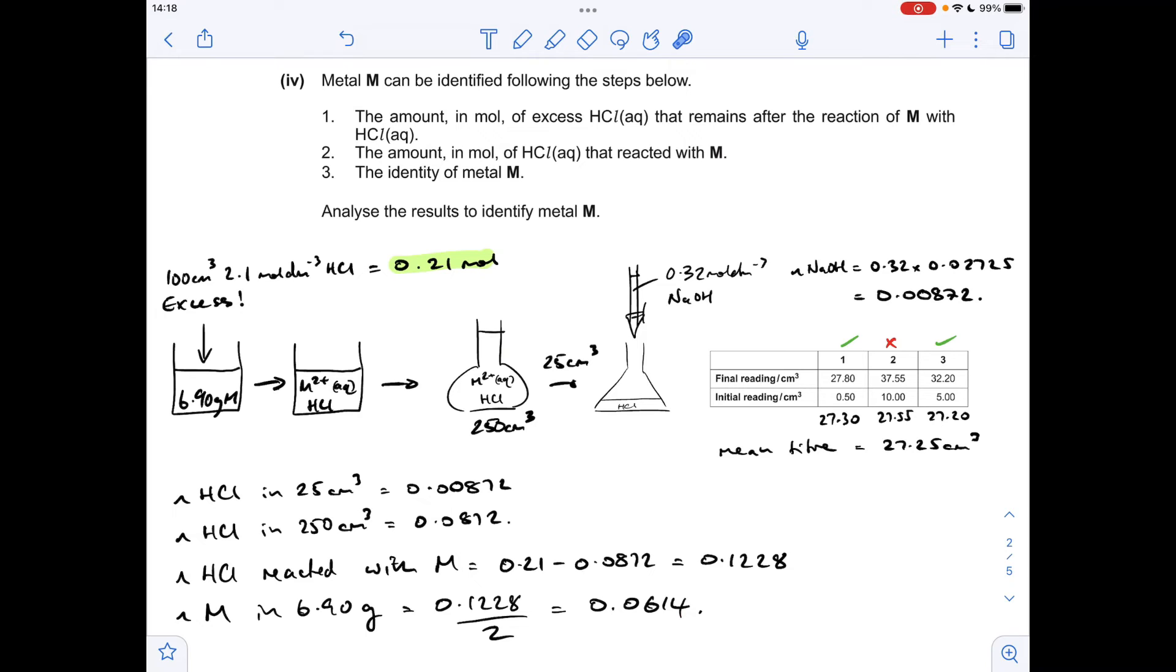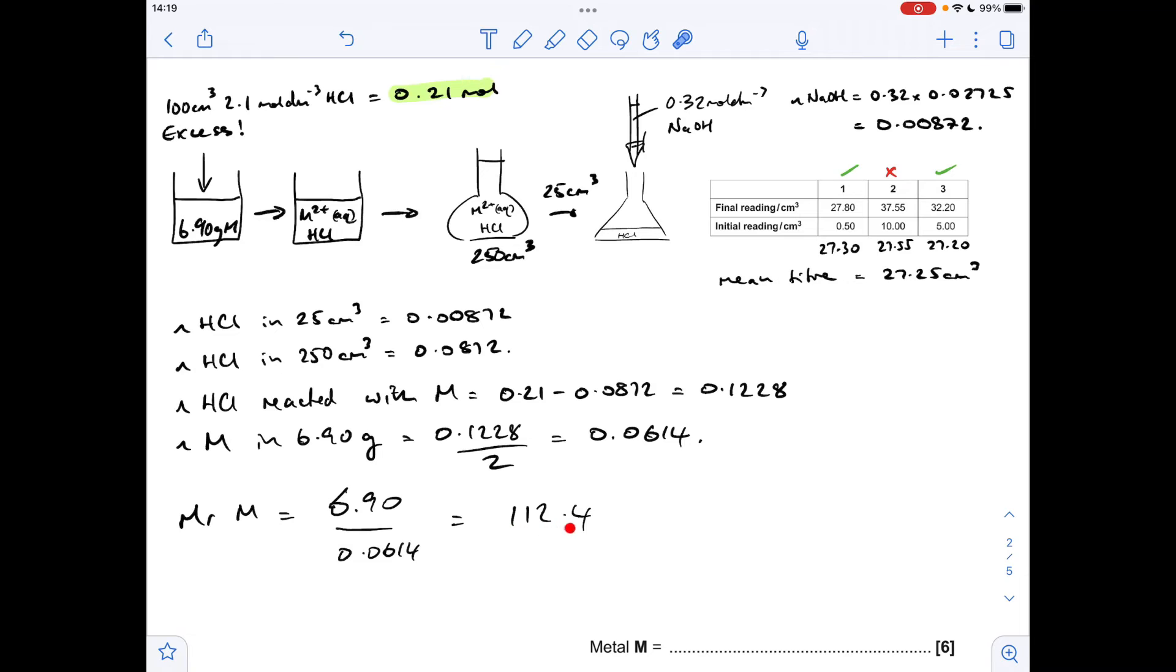So we're in a position now to work out the MR. So the mass, the 6.9 divided by the moles, is going to give us that MR, and then we're going to identify what M was. So the MR comes out at 112.4, which means that the metal M was cadmium. So very well done if you got that right.